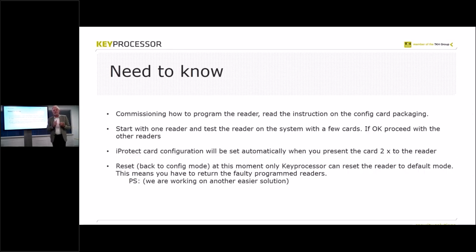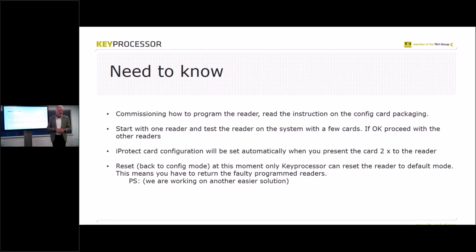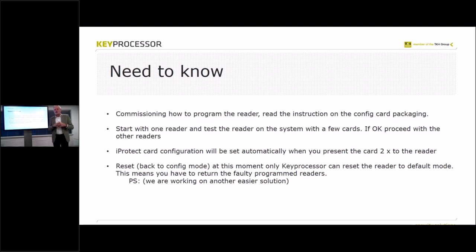Now we know we have the programmable reader and configuration card, we know how to order and ship it. Everybody now knows how to program a reader: power it up, put the configuration card in front of it, after a few beeps you have a red light and it's programmed — nothing more. The commissioning instructions are also printed on the shipping envelope. Start with one reader: program it, test it, and when you're satisfied with how it works, then do the rest of the readers.